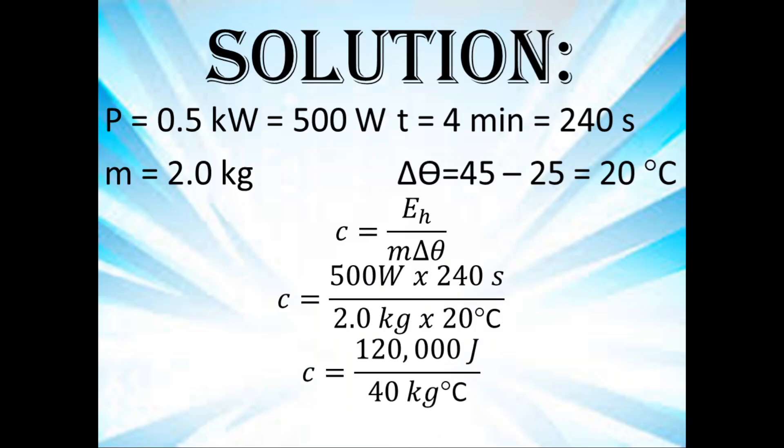So that would be 120,000 joules divided by 40 kilogram degrees Celsius, and that will give us that the specific heat capacity of the liquid is 3,000 joules per kilogram degree Celsius.